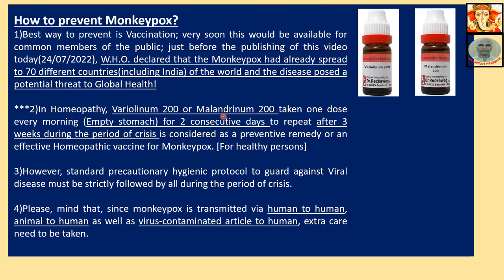Variolinum-200 and Malandrinum-200 — anyone can take one dose every morning for two consecutive days, to be repeated after three weeks during the period of crisis. This is homeopathic vaccination and is considered a proved vaccine. It was previously used for smallpox; now it will be used for monkeypox because the very essence of these two viruses is the same. Additionally, standard precautionary hygienic protocol to guard against viral disease must be strictly followed by all during this period.